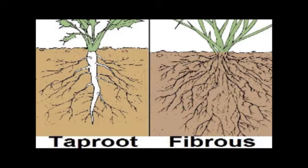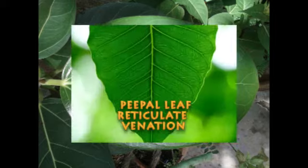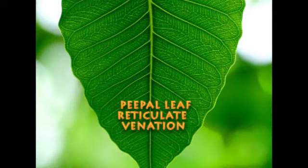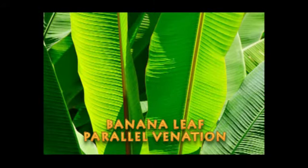How can we do that? We can see the leaf venation — that means whether it is parallel or reticulate venation. If the venation is reticulate, it means this plant has a tap root, and in parallel venation the plants have fibrous roots.